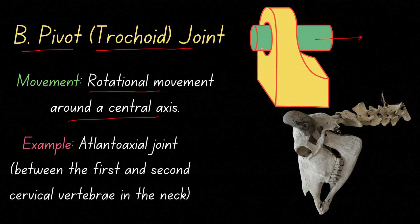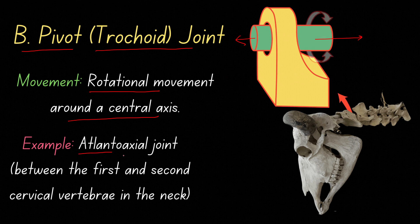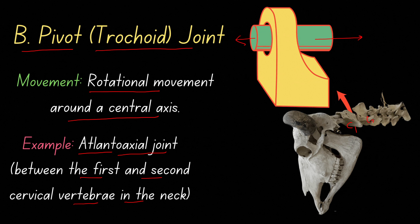In the pivot or trochoid joint, rotational motion occurs around a central axis. An example is the atlanto-axial joint, between the first and second cervical vertebrae. You can see here C1 and C2 — the joint between them is the pivot or trochoid joint.